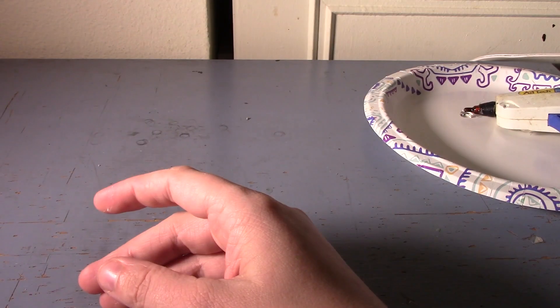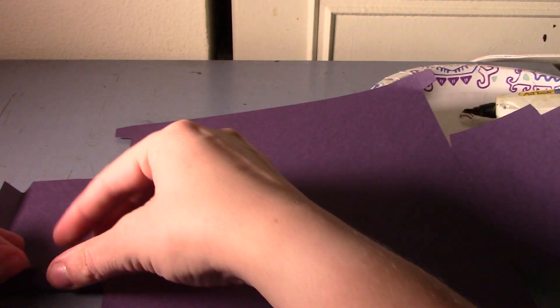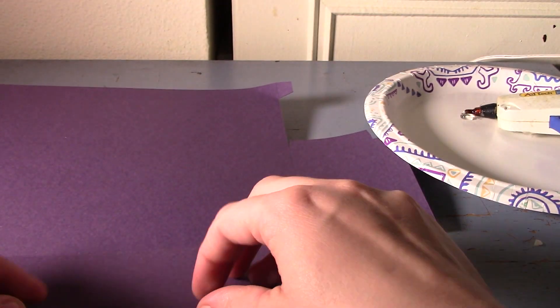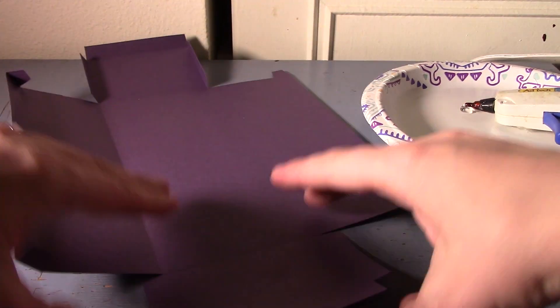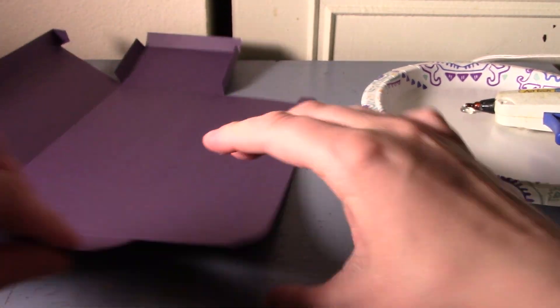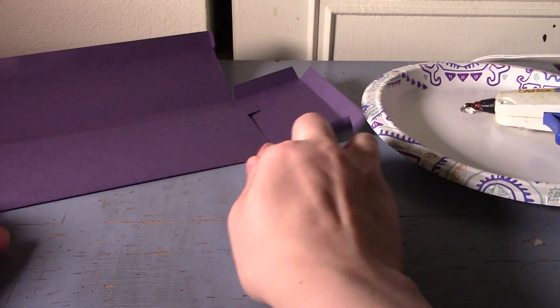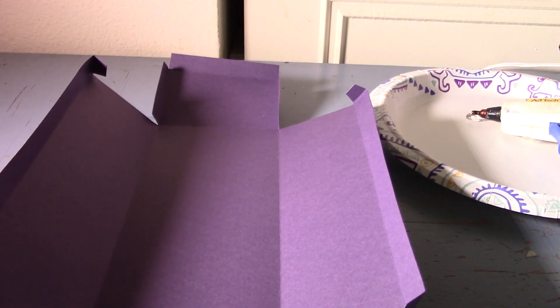So you have your top piece folded in. I'm going to go ahead and grab my bottom piece and we're just going to fold these real quick. And again, where you see the scoring lines, you want to fold those in.